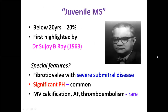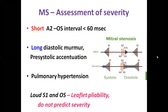Juvenile mitral stenosis is seen in children below 20 years, accounting for about 20 percent of earlier series, first highlighted by Dr. Sukumar B. Roy. Special features include a highly fibrotic valve with severe subvalvular disease so PTMC results may be suboptimal, and significant pulmonary hypertension is common. However, mitral valve calcification, atrial fibrillation, and thromboembolism are rare. Severity of mitral stenosis can be assessed clinically by two direct parameters: the A2-to-opening-snap interval and the length of the murmur.